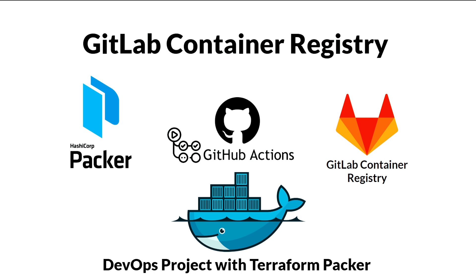Hello friends, welcome back to this session — a series of DevOps projects with different combinations using GitHub Actions to push Docker images to different kinds of registries. Today we are going to see how we can push the Docker image to the GitLab container registry. In previous sessions we covered Azure, AWS, and Docker Hub.